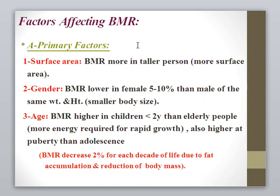Factors affecting the basal metabolic rate include: surface area — the taller the person, the greater the surface area and the higher the BMR. Gender — males have a higher metabolic rate than females by 5 to 10%. Age — BMR is higher in children than the elderly due to rapid growth, higher in puberty than adolescence, and decreases by 2% for each decade of life due to fat accumulation and reduction in body mass.